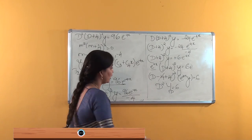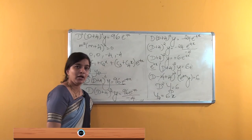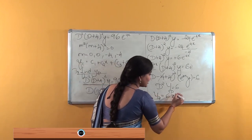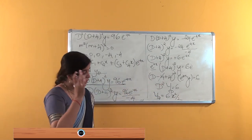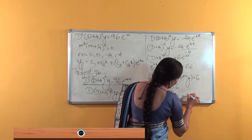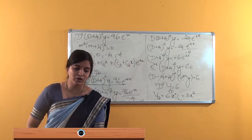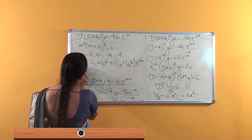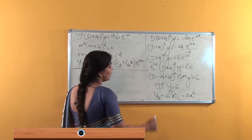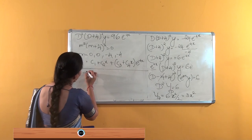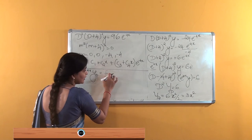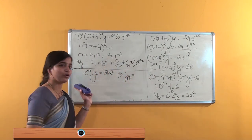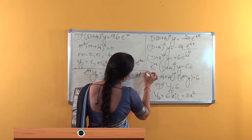To solve D squared Y equals 6, we integrate twice. First integration gives D·Y equals 6x. Second integration gives Y equals 6x squared over 2, which is 3x squared. Since capital Y equals e to the power 4x times yp, we have e to the power 4x times yp equals 3x squared. Shifting back, the particular solution is yp equals 3x squared e to the power minus 4x.